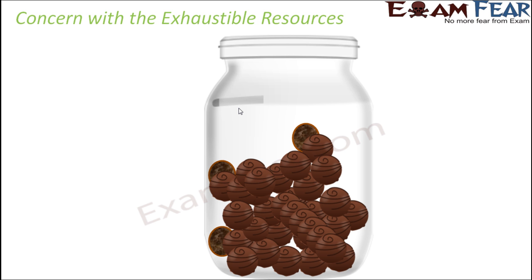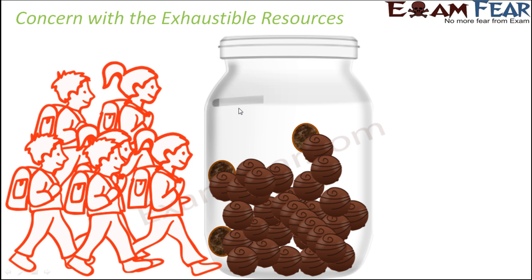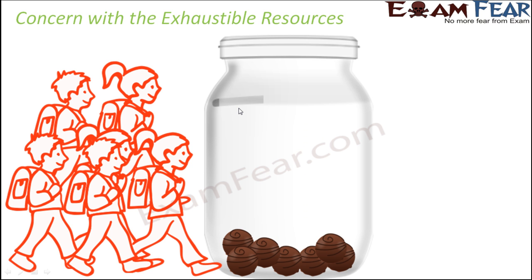It is just like this jar of chocolates. The jar is not even full — this much stock is what you have. Now suppose there are two students in the class to eat these chocolates. Even though it is half a jar, for two students it is quite enough. Now if they start eating one or two chocolates, the amount starts decreasing. If the number of students suddenly increases — say from two to ten students feeding on the same half-full jar — the number of chocolates will reduce suddenly because now more people are there to consume them.